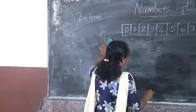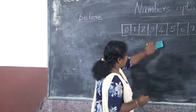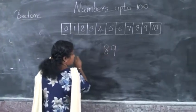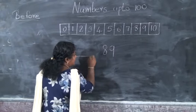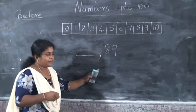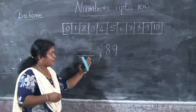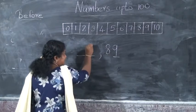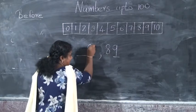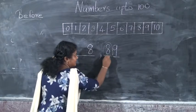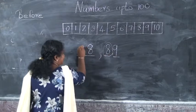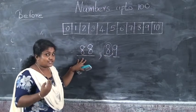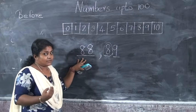And the next one — 89. We have to write the before number of 89. 9's before number is 8. Write this 8 here. So 89's before number is 88. Understood.